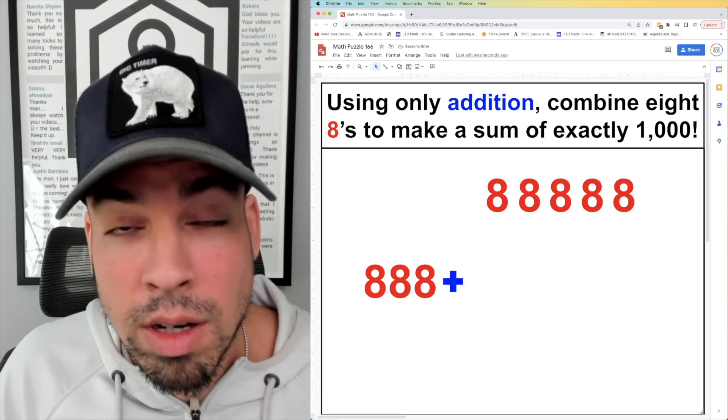So the first thing I'm going to do is I'm going to take three of these eights and make 888. Next, I'm going to add a plus symbol, and then we have to figure out what to add next. So we're still 112 away from a thousand, so I need another reasonably big number like 88 to add.